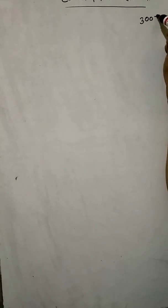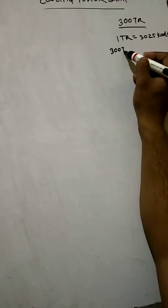Dear friends, today we are going to see the cooling tower basin — how to design the cooling tower basin. Suppose your cooling tower capacity is 300 TR. 1 TR is equal to 3025 kcal per hour, so 300 TR is equal to 9,075,000 kcal per hour.